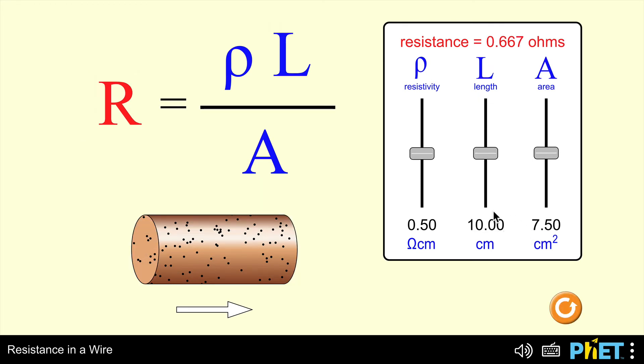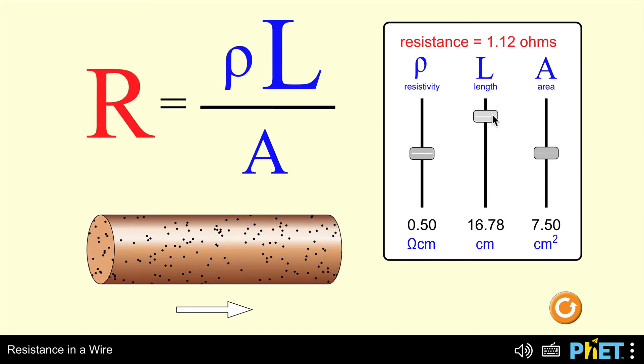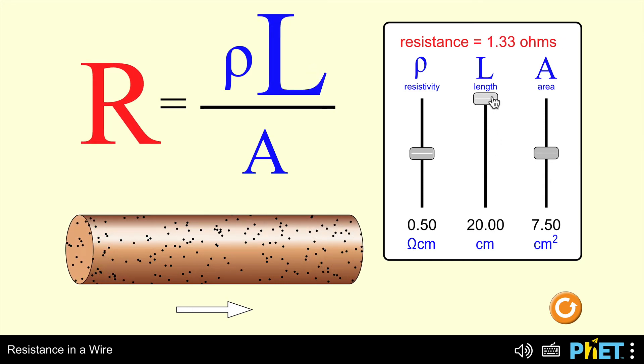Now, start again and note that the length of the wire at the moment is 10 centimeters. The resistance of the wire is 0.667 ohms. What's going to happen when I double the length of the wire from 10 centimeters to 20 centimeters? Have a look at the resistance. As it's increasing, the resistance increases, and when I double the length to 20 centimeters, the resistance is actually doubled as well.